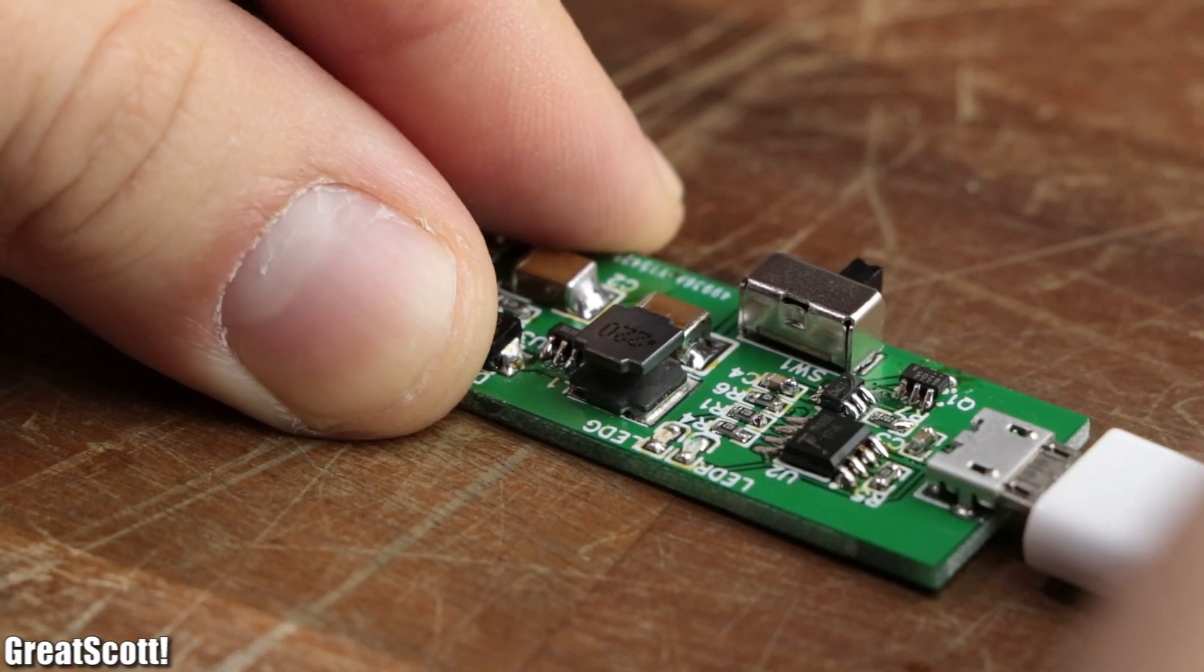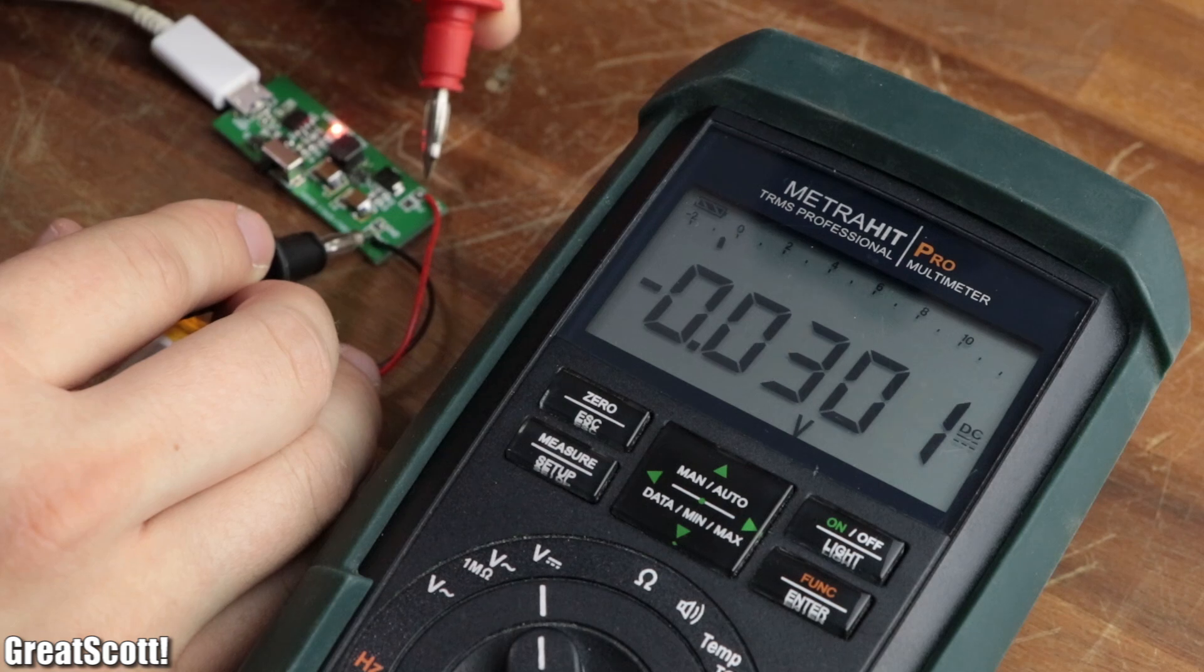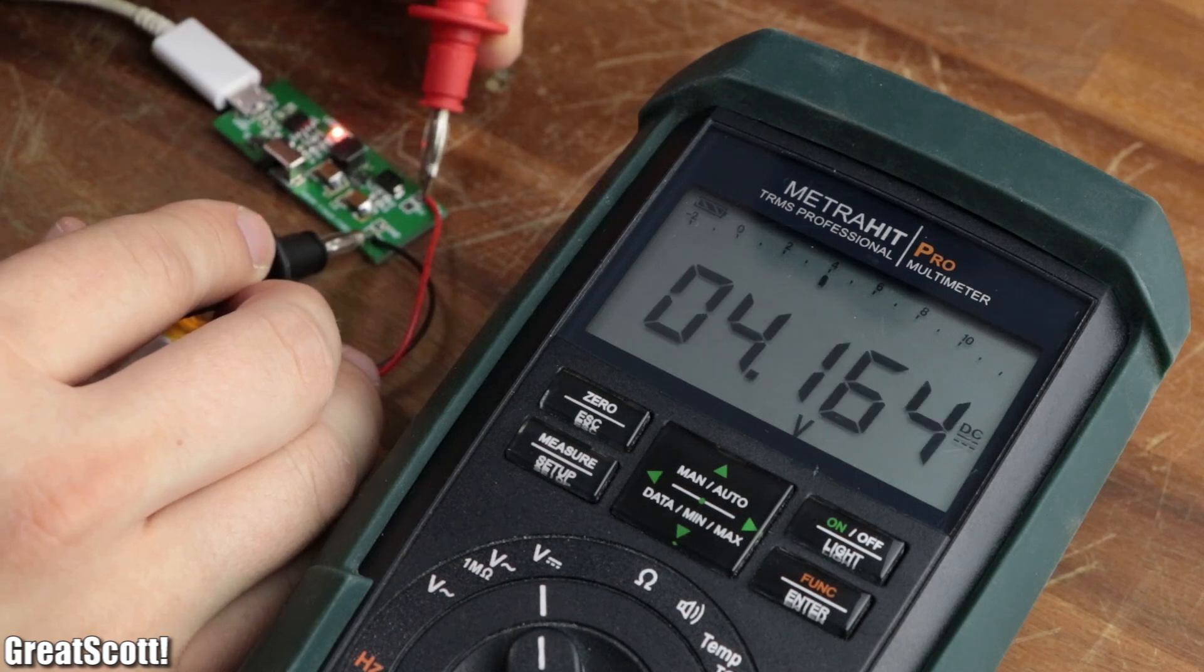As you can see, the red LED lighted up and the battery started charging with a current of only 300 milliamps, since the battery was already almost completely charged up.